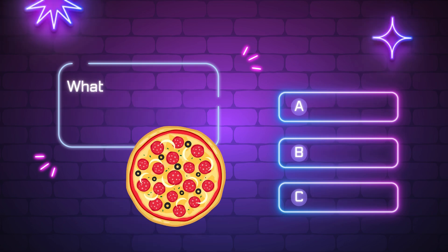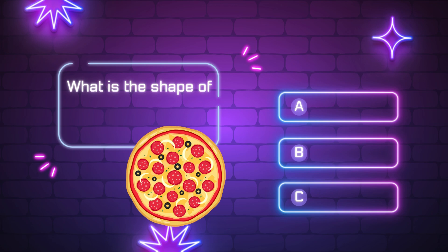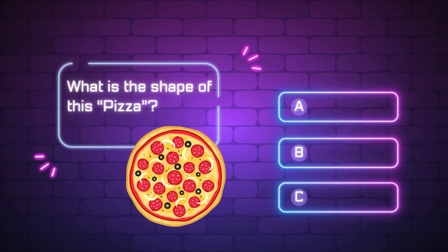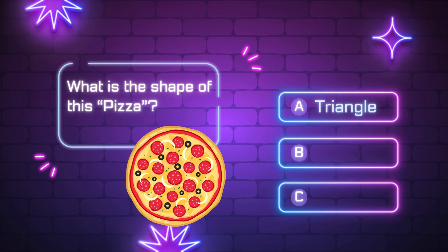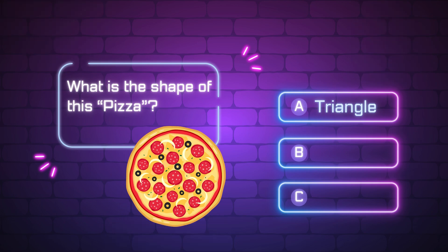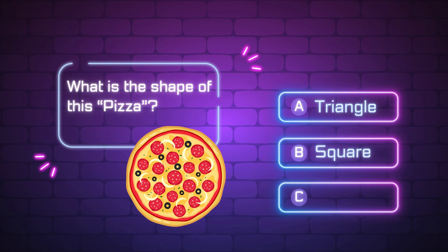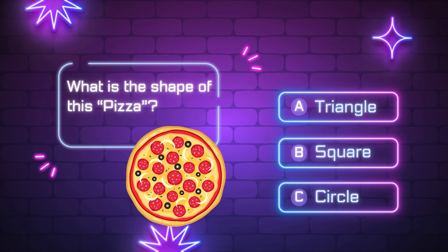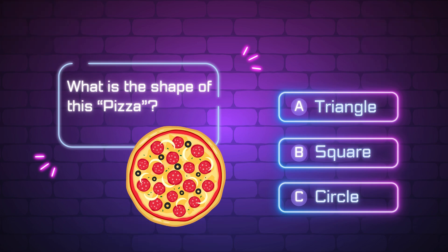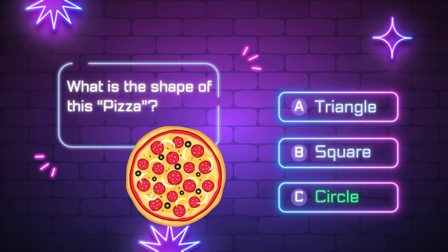What is the shape of this pizza? A, triangle. B, square. C, circle. Yes, it is a circle.